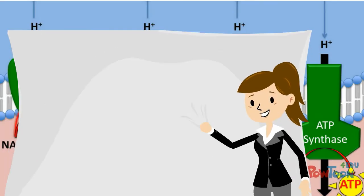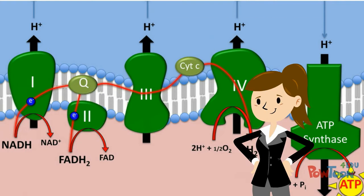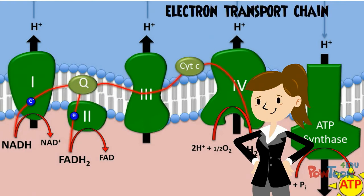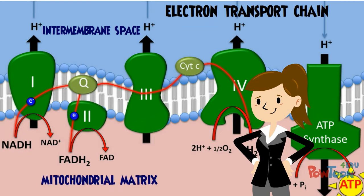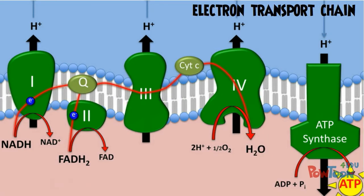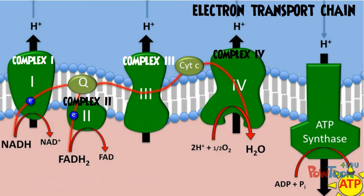Let's take a closer look. The ETC is surrounded by the inter-membrane space, the mitochondria matrix, and housed in the inner membrane. It is composed of complex 1, complex 2, complex 3, complex 4, and the ATP synthase.